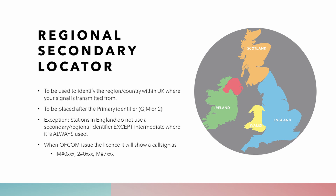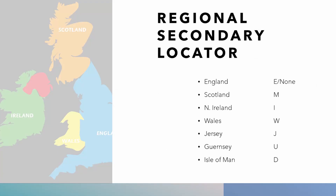This regional identifier is placed after the primary identifier — G, M or the number 2. The exception being stations in England, which do not need to use the secondary or regional identifier, except intermediate call signs where it is always used. When Ofcom issue the licence, it will show a call sign with the hash character identifying where the regional secondary locator character should go — for example, M-0-#-X-X-X or 2-0-#-X-X-X.